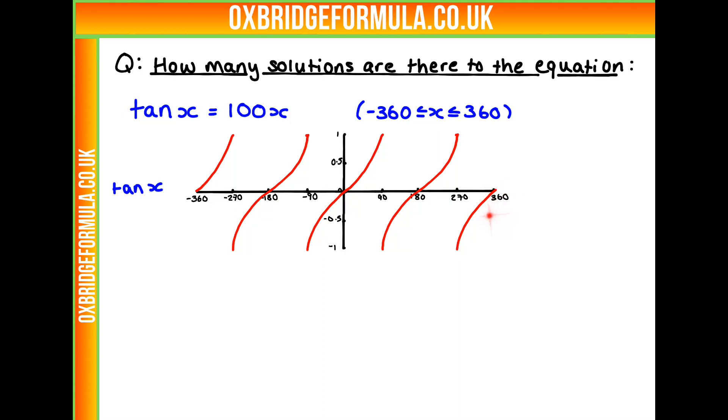Now this isn't quite the graph we're looking for, because we see tan x equals 100x. So if we're looking for x, we need to divide both sides by 100. So the graph we're actually looking for is tan x over 100.